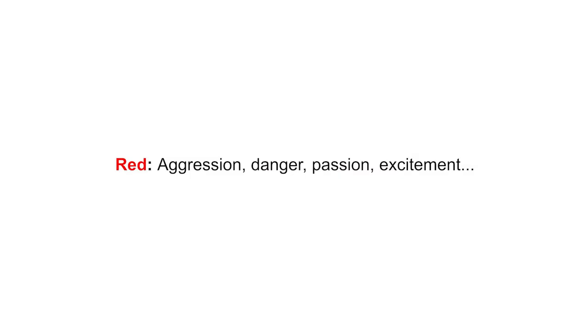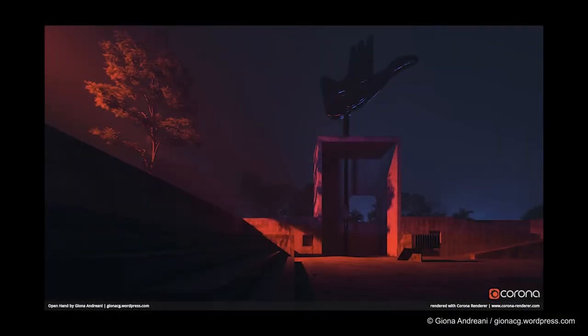We can dive straight into the psychology behind one of the main colors, starting with red. Depending on the shade, red can be one of the strongest and most intense colors. It indicates aggression, danger, passion, and excitement — it almost immediately and instinctively calls for attention. Maybe the reason behind this relationship between red and danger is its association with blood, which is red. We are somehow hardwired to read red as something dangerous or something that calls for our attention.